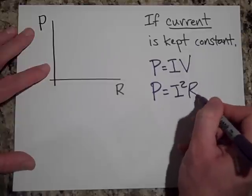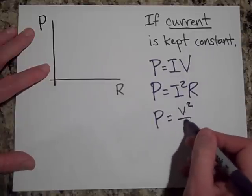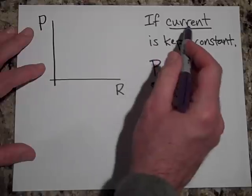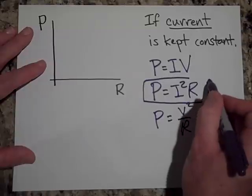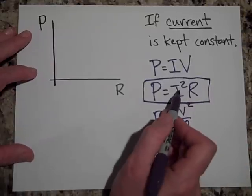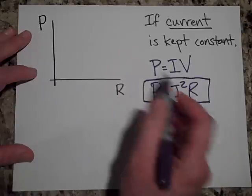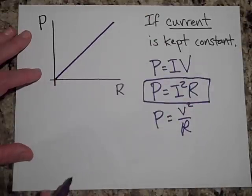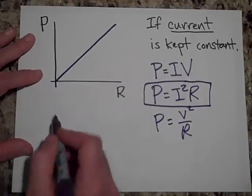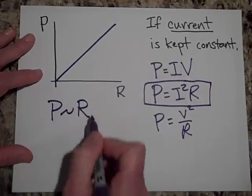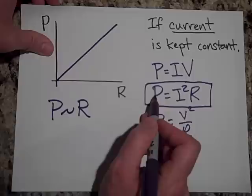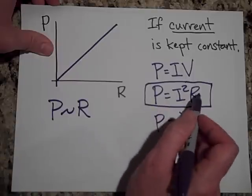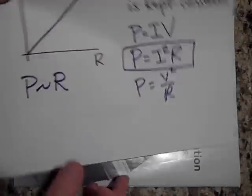IV, I squared R, or V squared over R. But since you're keeping current constant and you want to know how power and R are related, this is the one you want. So if you keep current constant, then what happens is R goes up, then this is just going to be a nice straight line. And we say that power is directly proportional to R. Let's see, if I double R, I double, keep this constant. So if I double R, I double the power. If I triple R, I triple the power. That was so fun, let's do another one.